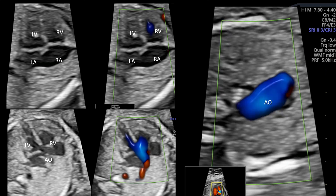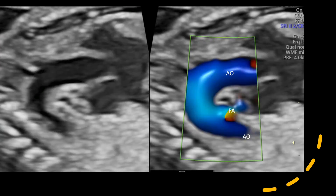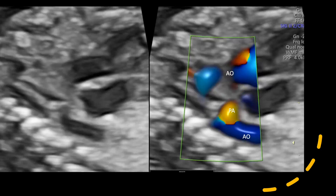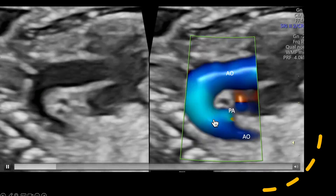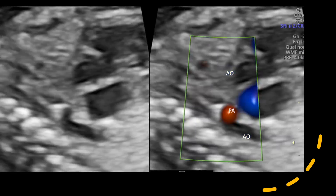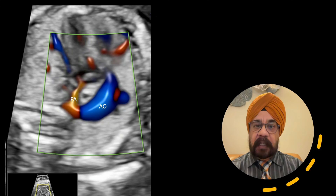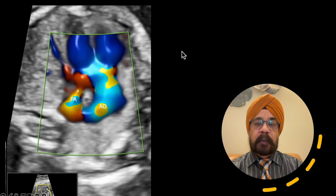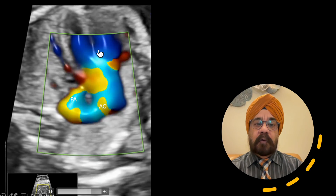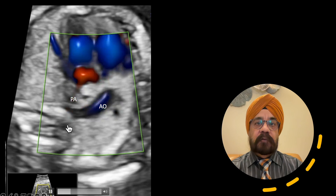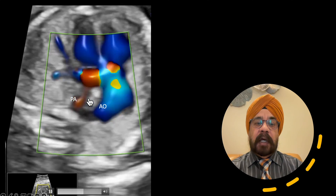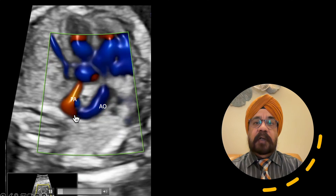We go to a sagittal view and here you do not see the pulmonary artery coming out of the right ventricle, but you see a pulmonary artery which is filling retrogradely from the aorta — this is the PA filling from the ductus arteriosus. The pulmonary artery is showing retrograde flow and the trachea is sitting in the center, meaning this is a right-sided aortic arch with a left-sided ductus.